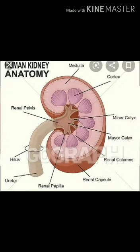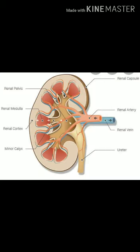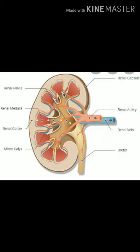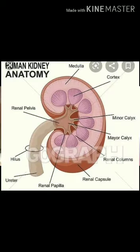What is meant by cortex and medulla? The kidney is divided into distinct regions: an outer dark region called the cortex, and an inner lighter region called the medulla. The medulla region of the kidney is organized into several conical masses or pyramids, whose apex projects into the pelvis of the kidney. These conical masses are called the renal pyramids.